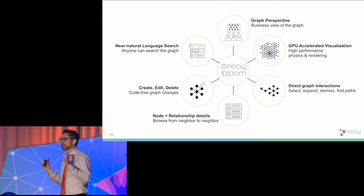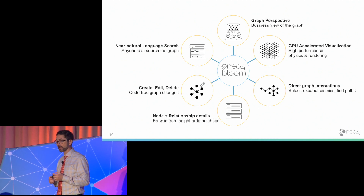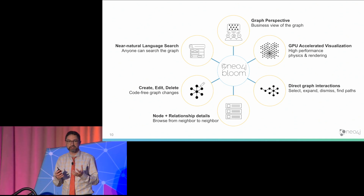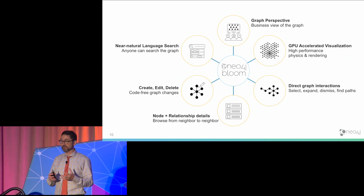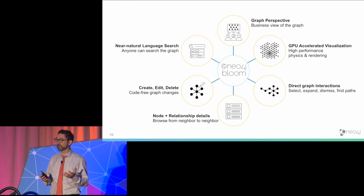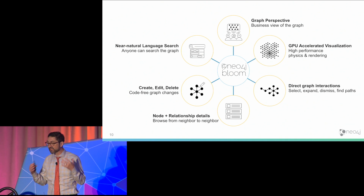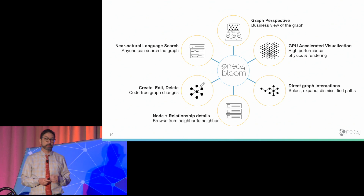The graph perspective and the near-natural language search are what we feel are the defining product features of Neo4j Bloom — how it's different from other graph visualization products and the things we want to focus on. Because we're Neo4j, the database company, these reflect our heritage and our sweet spot. We understand how people model data inside graphs — we've been doing that for well over a decade. We also understand how to find stuff within a graph with our Cypher query language, which we invented and is now becoming an industry standard. We want to extend that and make it available to everyday users through near-natural language search.